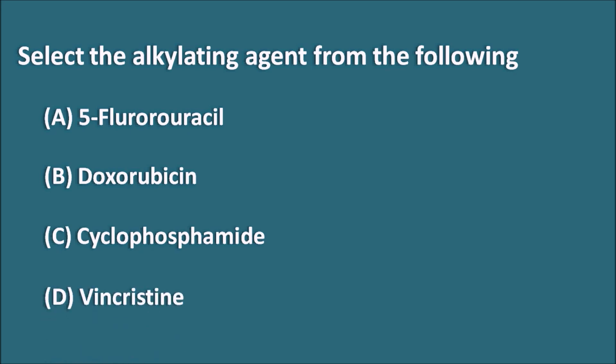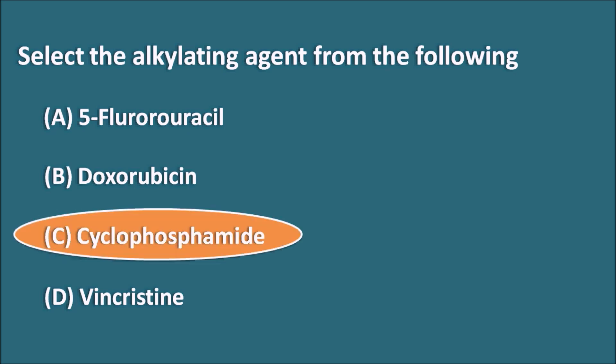The drug acting as an alkylating agent is cyclophosphamide. Cyclophosphamide is a nitrogen mustard which acts as an alkylating agent. Let us see what the other drugs are and which category they belong to.